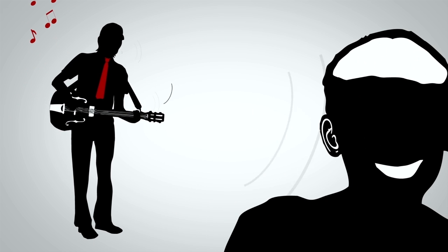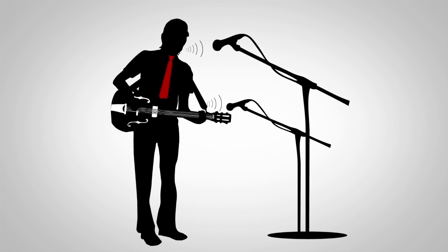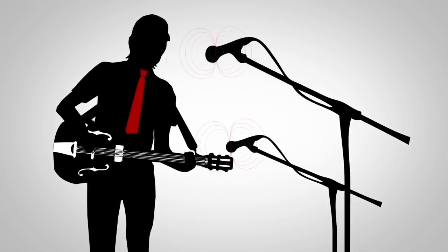Thus, we're looking for a polar pattern that when facing the vocal rejects the sound of the guitar, and when facing the guitar rejects the sound of the voice. A figure eight pattern will suit us best for this scenario.